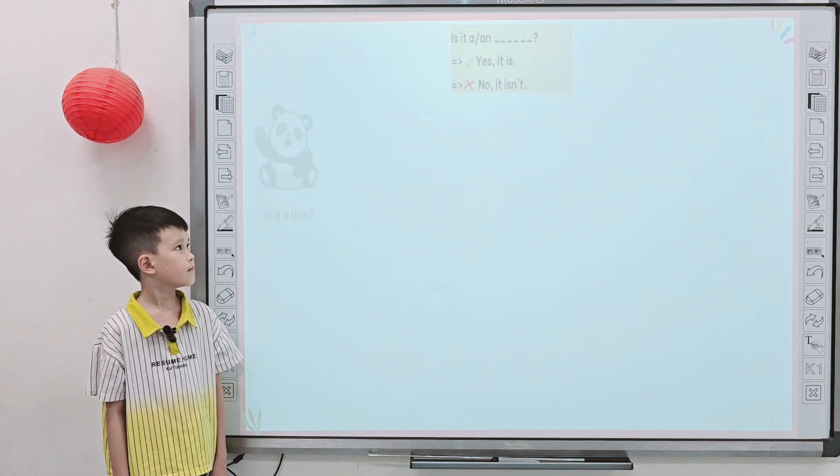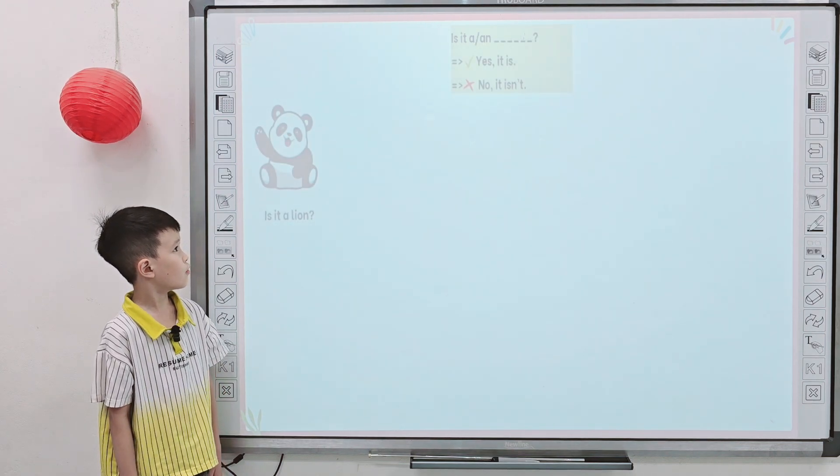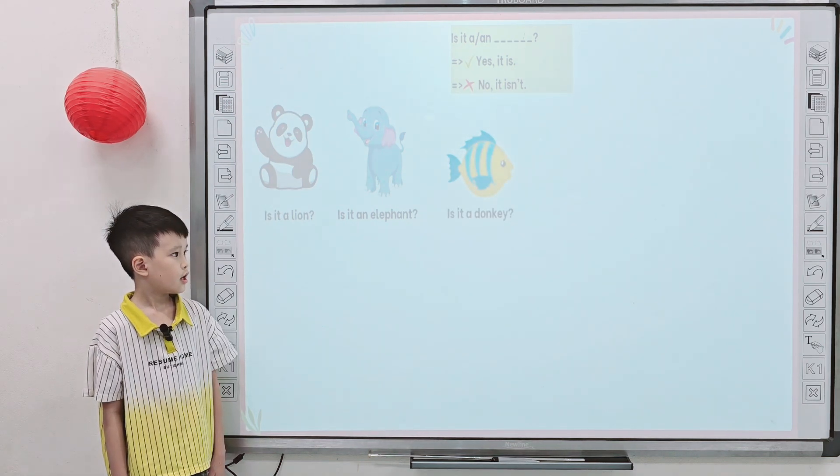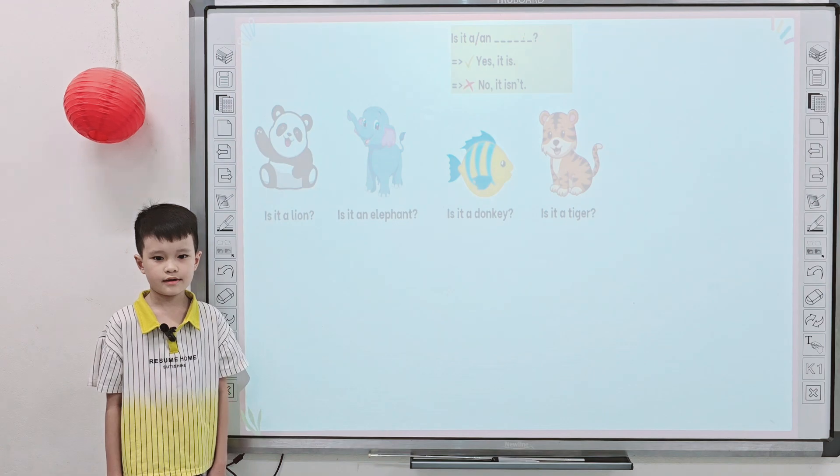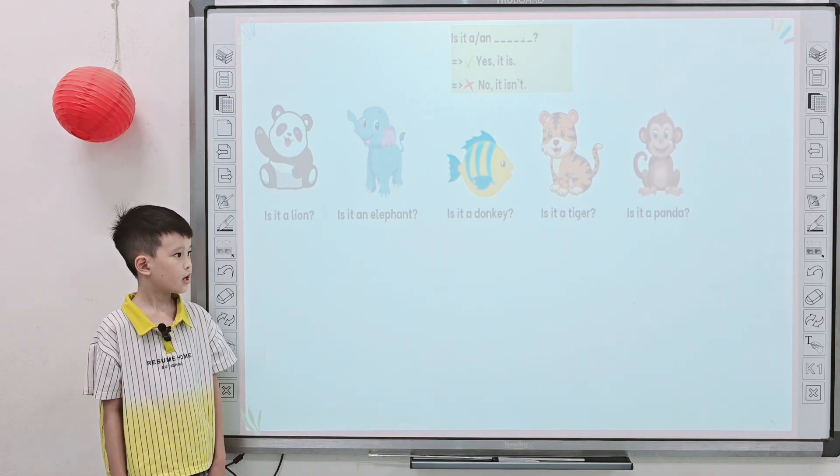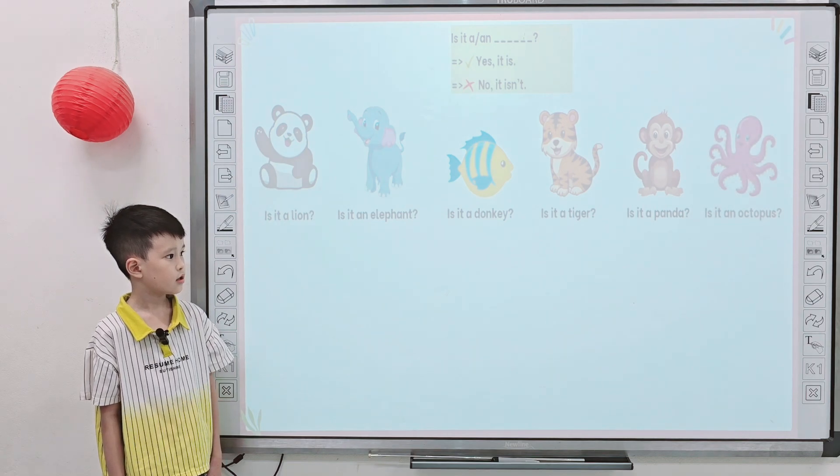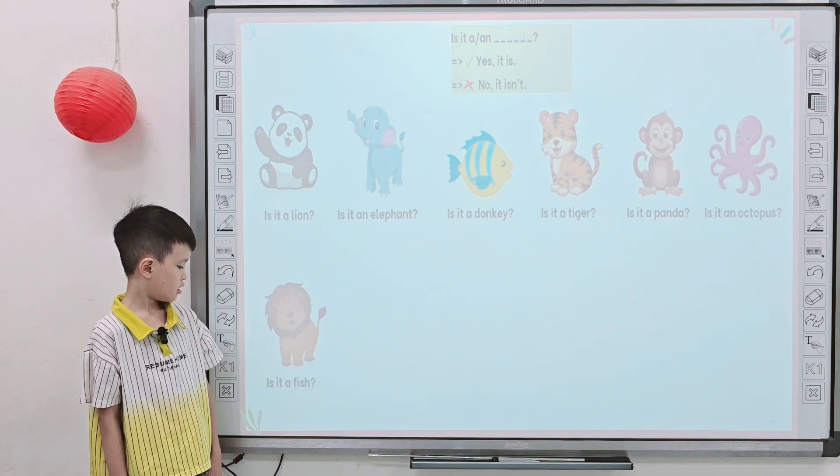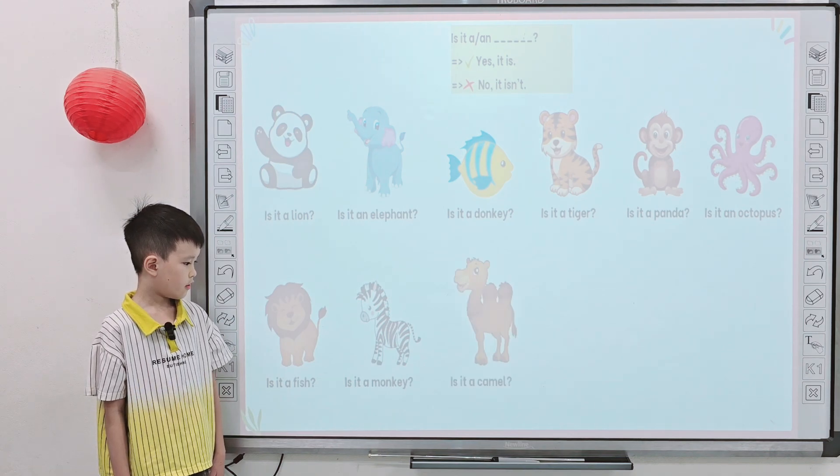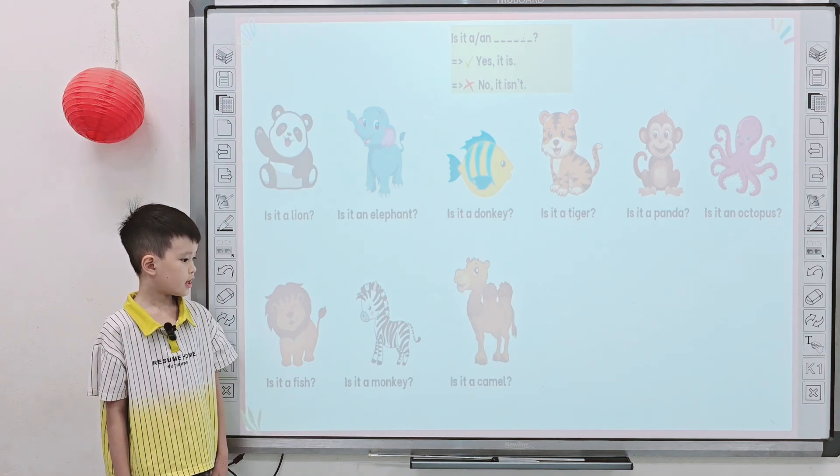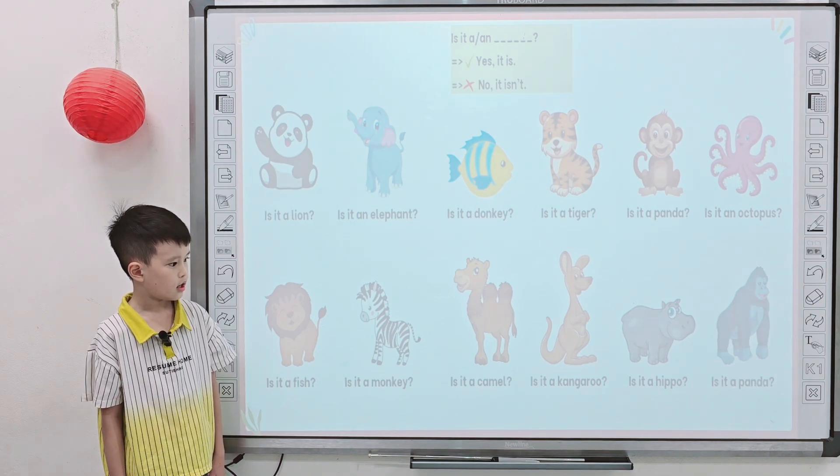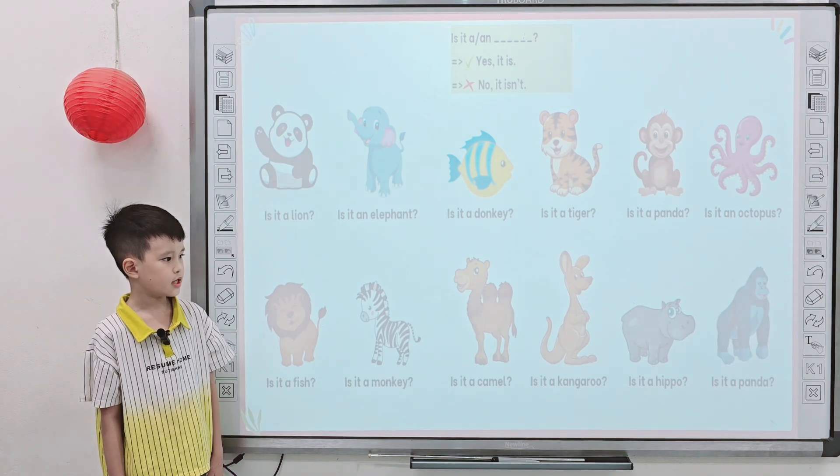And look at screen, tell me, is it a lion? No, it isn't. Is it an elephant? Yes, it is. And is it a donkey? No, it isn't. Is it a tiger? Yes, it is. Is it a panda? No, it isn't. Is it an octopus? Yes, it is. And is it a fish? No, it isn't. Is it a monkey? No, it isn't. Is it a camel? Yes, it is. Is it a kangaroo? Yes, it is. Is it a hippo? Yes, it is. And is it a panda? No, it isn't.